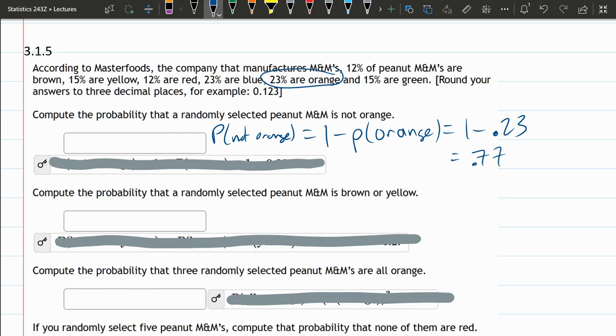Now, if you think about 23% being orange, the opposite of 23%, the opposite percentage is 77%, and that'll be the answer for this first one.